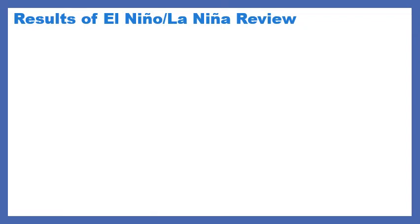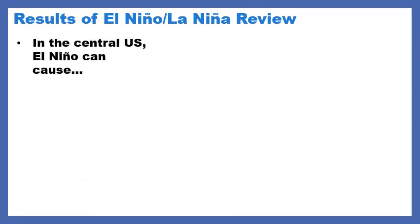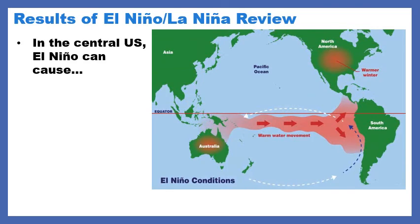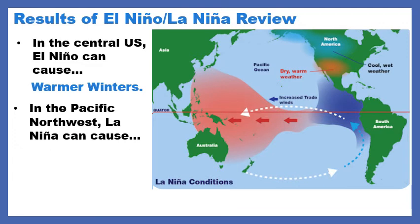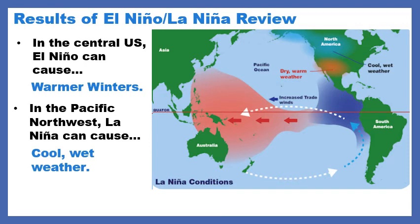Let's look at what results happen in El Niño and La Niña. In the central U.S., El Niño can cause warmer winters. What can El Niño bring or cause within that yellow circle? Read the labels on the map. In the central U.S., El Niño can cause warmer winters. Now switching to La Niña — the map has changed. In the Pacific Northwest, La Niña can cause... I'm going to circle the Pacific Northwest in yellow. Please read the map, read the labels. La Niña can cause cool, wet weather.